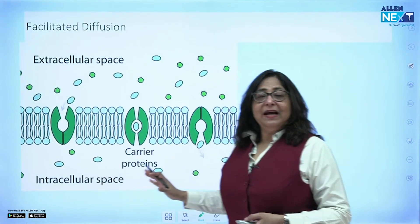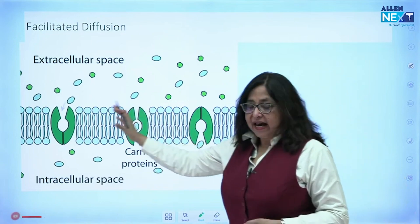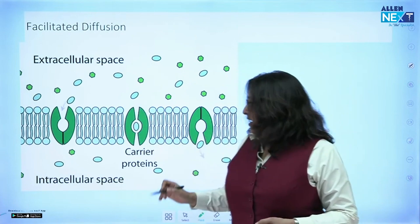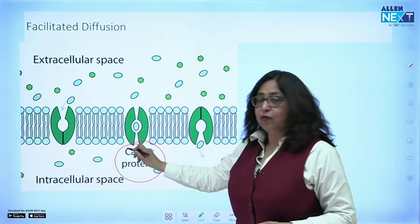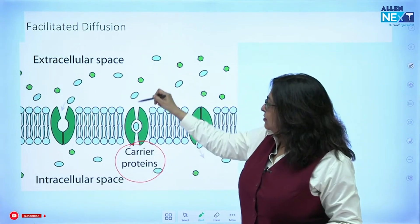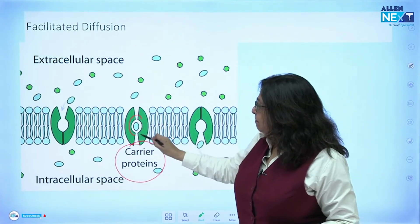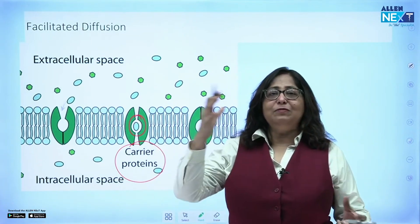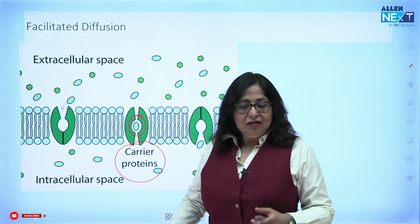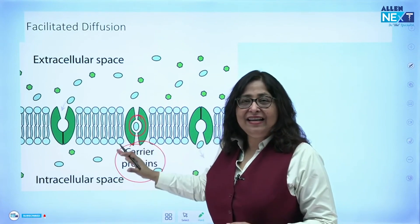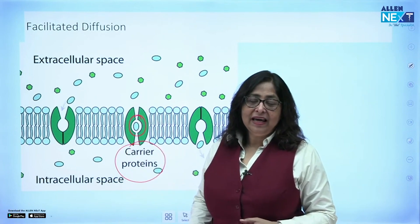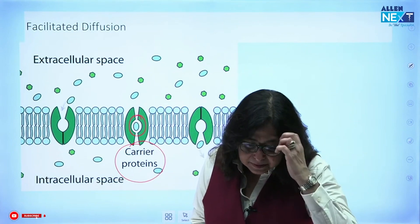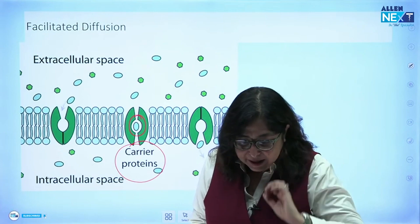In facilitated diffusion a carrier protein is involved. When a carrier protein is involved, the substance to be transported first binds with the carrier protein, then a conformational change occurs in the carrier protein, and the substance is transported into the cell. This is called carrier-mediated transport.